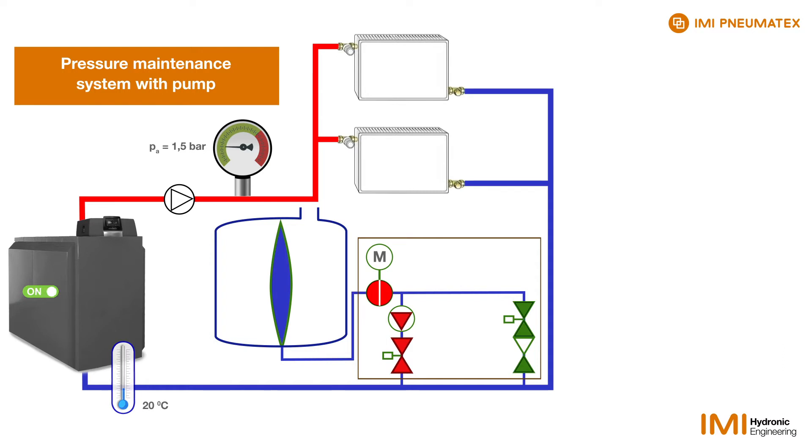If the boiler is now switched on and the water is heated, it expands so the pressure can increase to, for example, 1.8 bar.